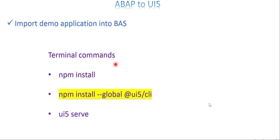Once it is unzipped, go through the files you have. When an application is imported, it needs some support files to run — for that, use the terminal command npm install. This is a very frequently used command we'll use in many places going forward. After npm install completes successfully, run your application using the command ui5 serve.